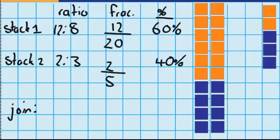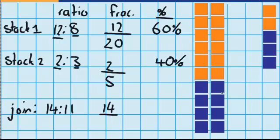Let's work out the ratio of orange to blue when they're all joined together. There were twelve in stack one and two in stack two, which means there must be fourteen orange. And there were eight blue in stack one and three blue in stack two, which means in total there are eleven blue. We could check that by adding them all up. As a fraction, fourteen are orange. To work out the denominator we need the total blocks — twenty in stack one and five in stack two — so our denominator is twenty-five.